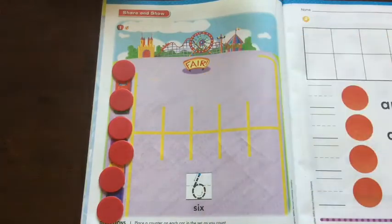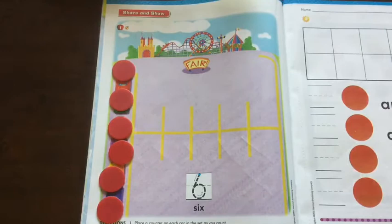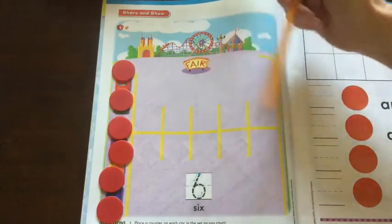Now I chose to use my circle counters. But if you want to use your number cubes, you can. If you want to use your teddy bears, you can. If you want to use beans or macaroni. Whatever you want to use as counters. Now we're going to move those counters into the parking lot. The parking lot is shaped like a 10 frame.